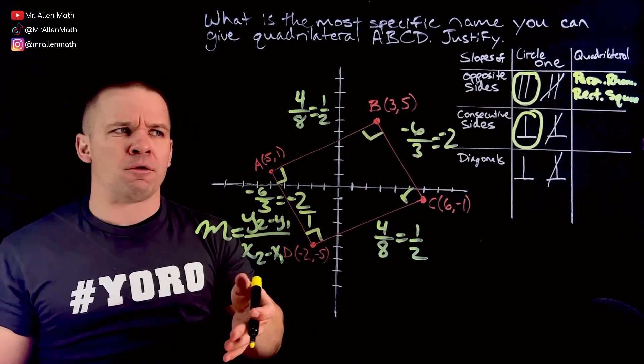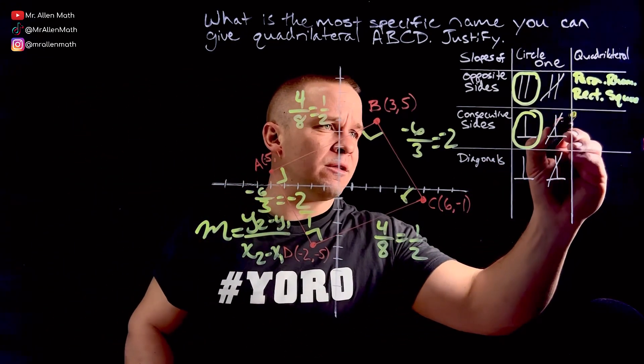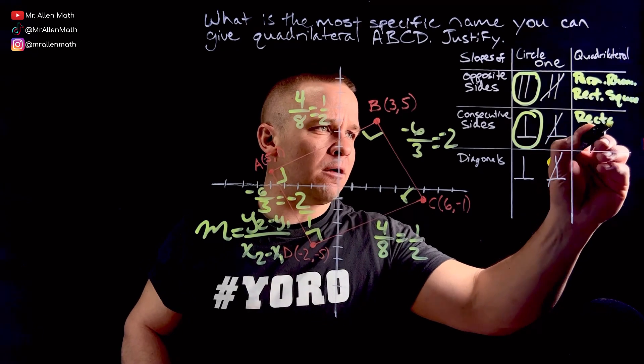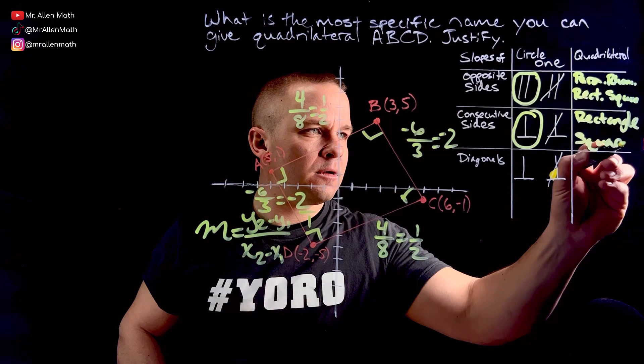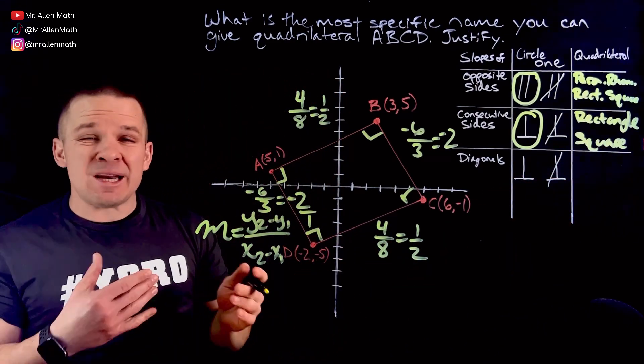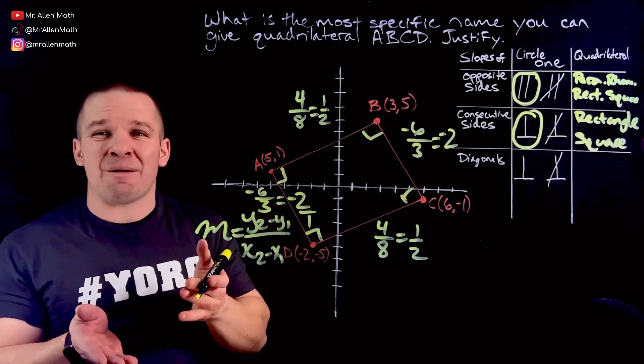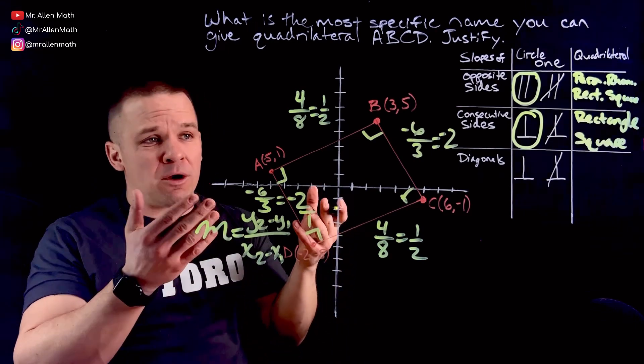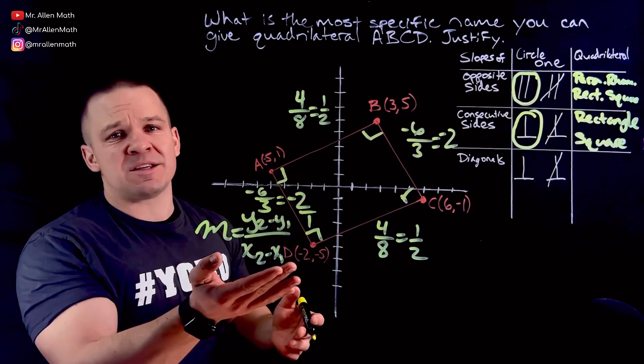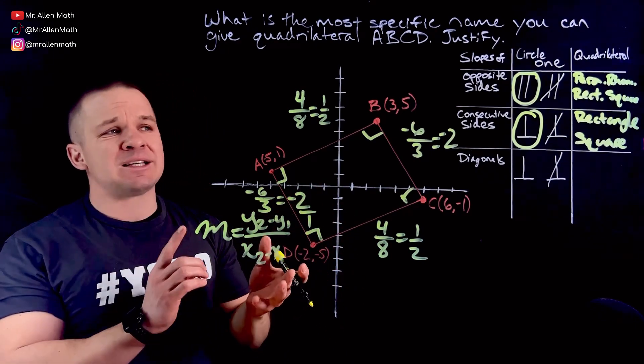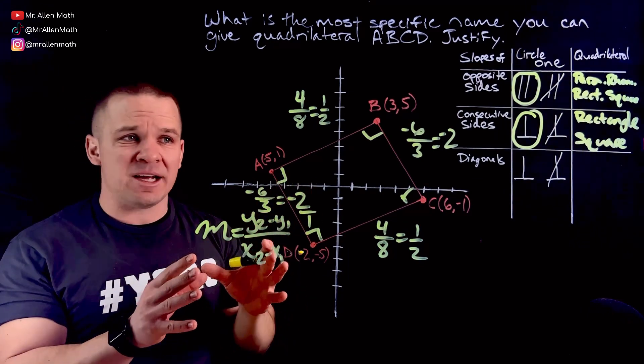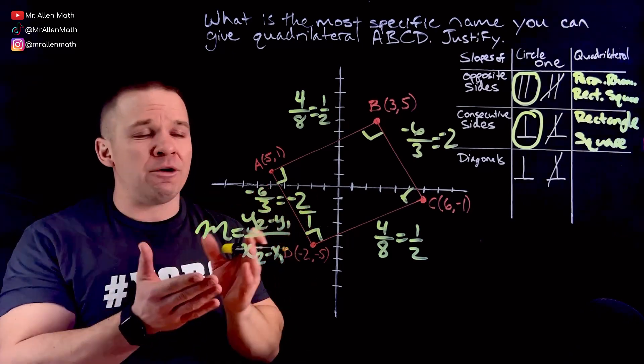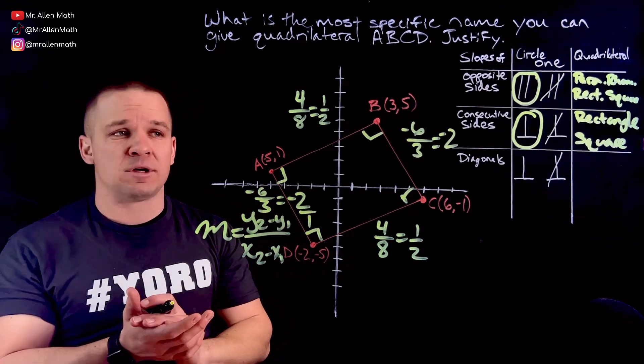What quadrilaterals have four right angles? That would be my rectangle. Rectangle. And square. Those have four right angles. But now I need to differentiate between those two. I can't pick both. I got to either pick rectangle or square. Now looking at this thing, I think right off the bat, we're thinking it's either going to be a rectangle or a parallelogram. The sides look to be different lengths, but perhaps they're perpendicular, maybe they're not. Well, we now know that it's either a rectangle or a square.